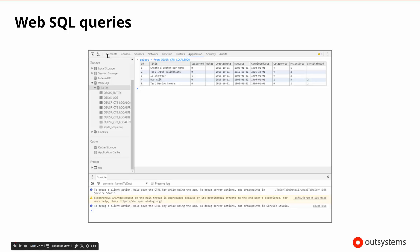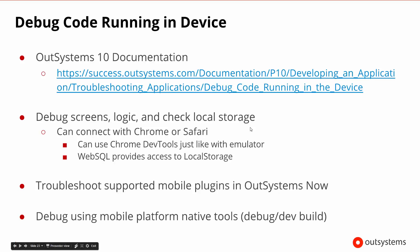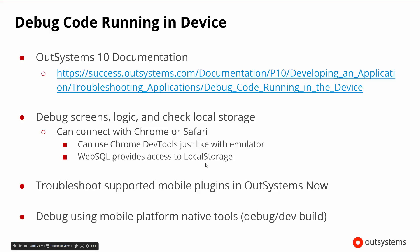DevTools is pretty cool — we have the capability of seeing a lot of different parts of our mobile app and getting more information about it. But this is still all in DevTools and still in the emulator. If we want to debug code actually running in the device, OutSystems 10 documentation has a section called 'debug code running in the device.' It goes into how we can look at screens, different types of actions and logic, and look at local storage by actually connecting Chrome or Safari to the device. We'd be using Chrome DevTools just like with the emulator, but connected to the device.